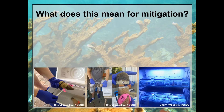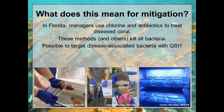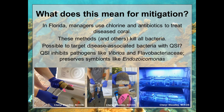What does this mean for mitigation, tying it back to NOAA? In Florida, managers are currently using chlorine and broad-spectrum antibiotics to treat diseased coral. However, these methods are indiscriminate bacterial killers — if you put broad-spectrum antibiotics or chlorine into a bacterial population, it's going to kill everything. From my work, we've seen that we maybe don't want to kill everything on the coral — we want to maintain the symbionts. Potentially it would be possible to target specifically disease-causing species with QSI, since it inhibits pathogens like vibrios, flavobacteria, and rhodobacteria while preserving symbionts like endozoicomonas. Cheryl Woodley from NCOS is using a dental paste with antibiotics applied directly to diseased corals — maybe QSI could be tried in a similar way in the field.